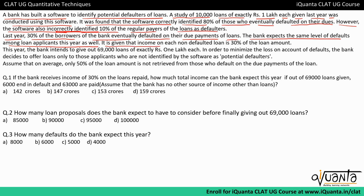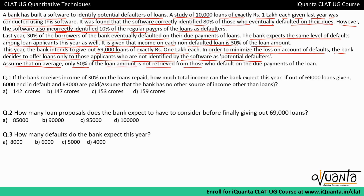The income on each non-defaulted loan is 30% of the loan amount. This year the bank intends to give out 16,000 loans of exactly rupees 1 lakh each. To minimize losses, the bank will offer loans only to applicants not identified as potential defaulters by the software. On average, only 50% of the loan amount is retrieved from those who default.